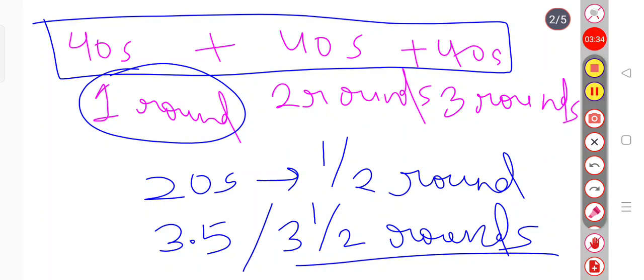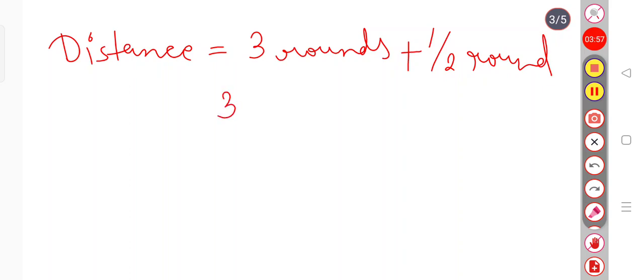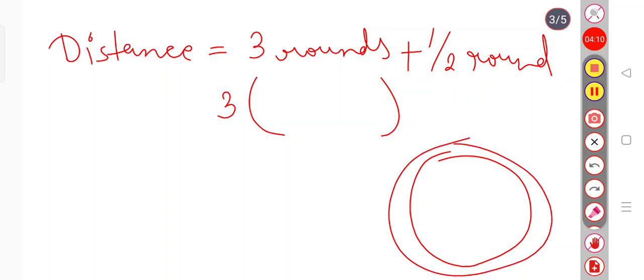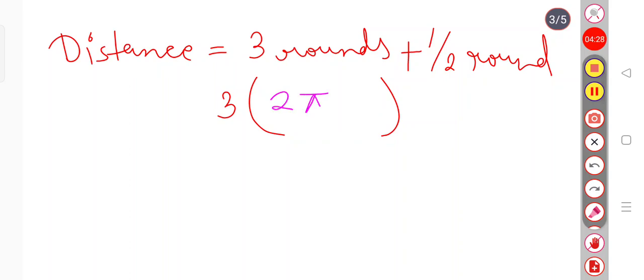So distance, that will be 3 rounds plus half round. So now the round is basically the circular track, that is the circumference. So the circumference of a circle has the formula 2πr. So we can take round as 2πr. So 3 times 2πr plus half times 2πr. So now we can further solve it.